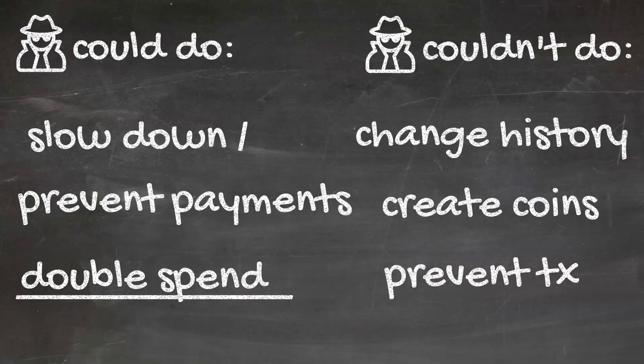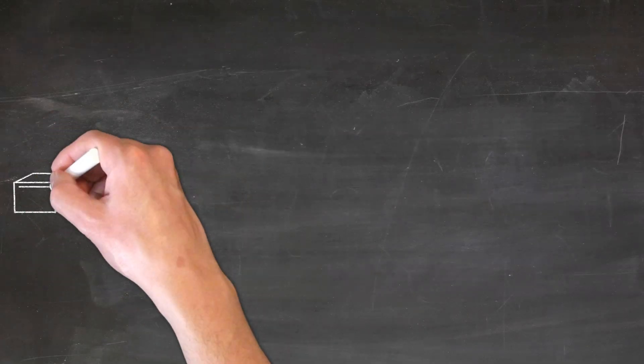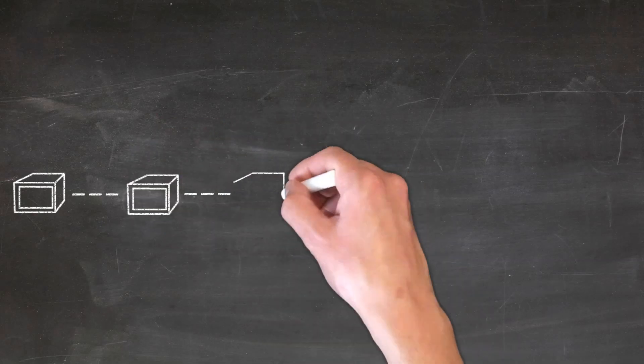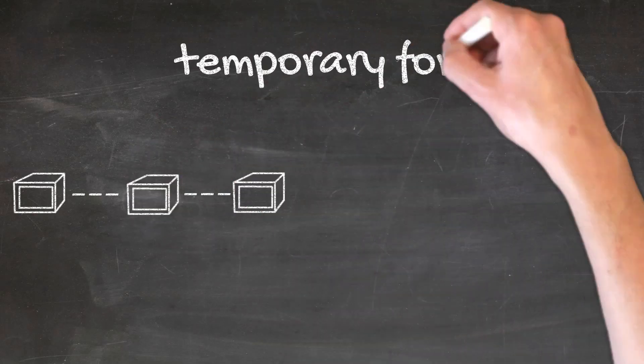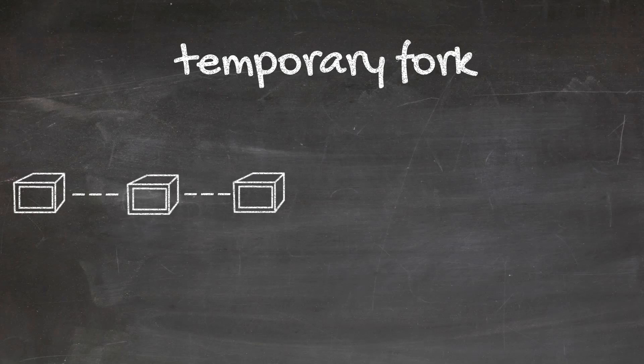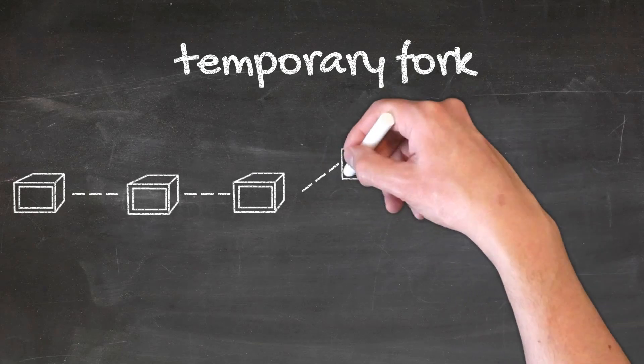Usually, the most attractive thing for an attacker is the so-called double-spend attack. To understand how double-spending is even possible, you have to know that blockchains can fork for a short time, if there is a disagreement in the network. This can happen for a number of reasons.